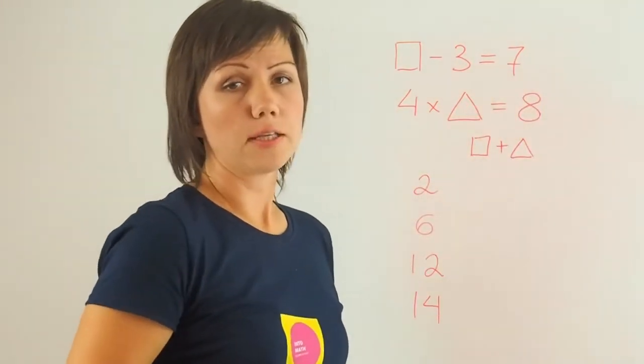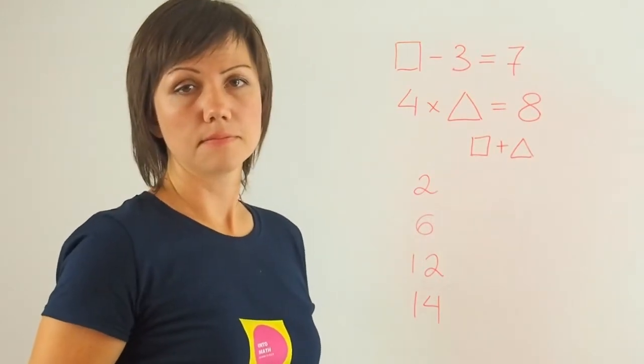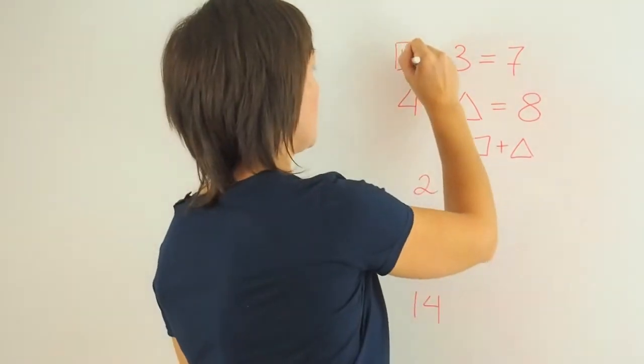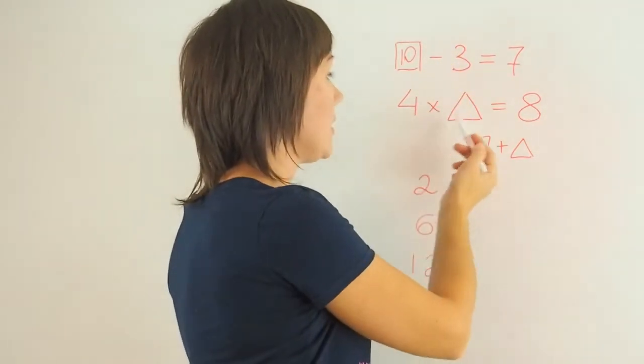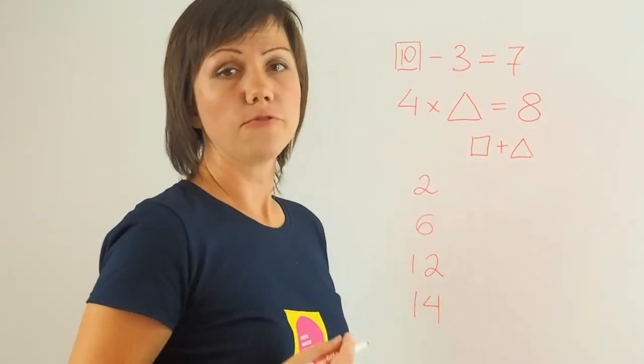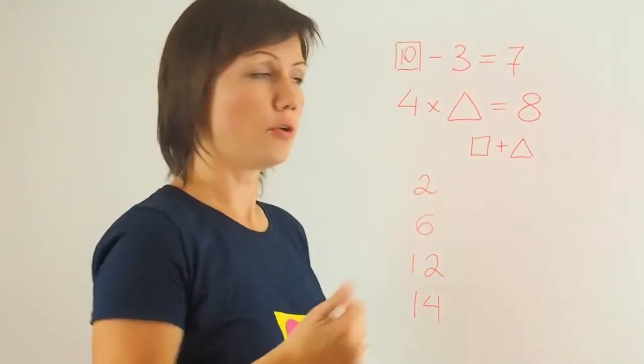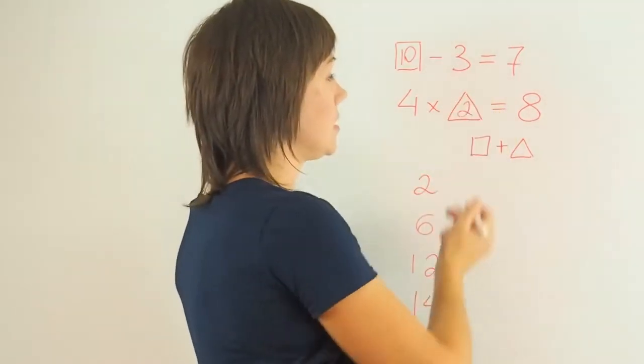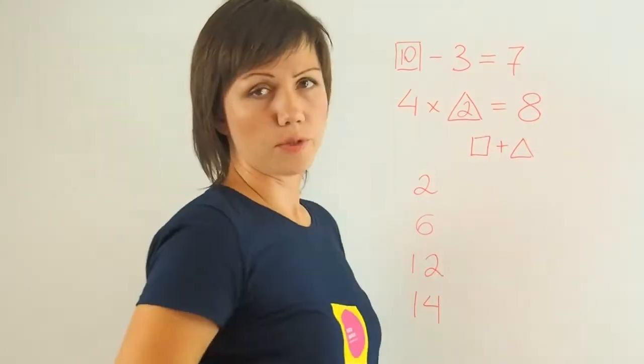What number do I need to subtract 3 from to get 7? 10. So the number here is 10. And what number do I need to multiply 4 by in order to get 8? 2. So the square would be 10 and the triangle would be 2.